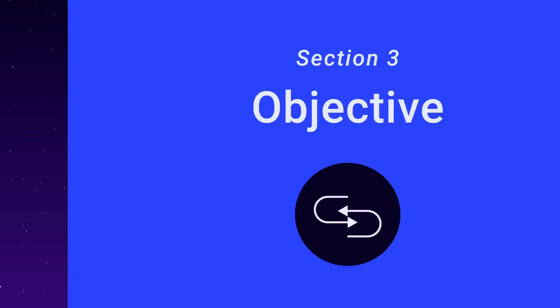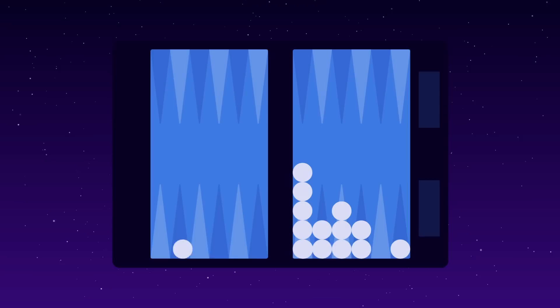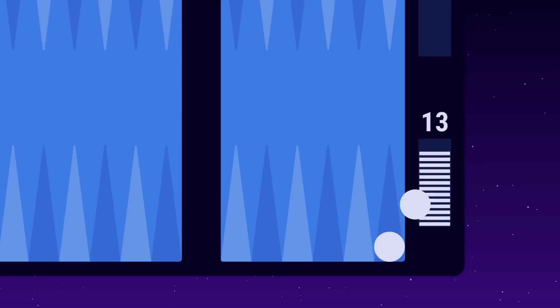Section 3. Objective. The objective of Backgammon is to move all your checkers into your home board and then bear them off. It's only possible to bear off checkers when all of your checkers are in your home board. The first player to bear off all their checkers wins the game. Let's watch a game between white and blue.